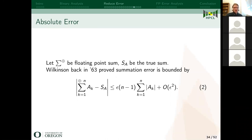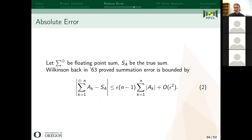I was not the first one to study summation error, but there is a previous bound on absolute error. Let S_A be the true sum and the sigma summation be the floating point sum. We have a bound on the error which depends on machine epsilon, the size of the array n, and the magnitudes of the array values. However, this bound is often very pessimistic — your error will be predicted to be far worse than it actually is.